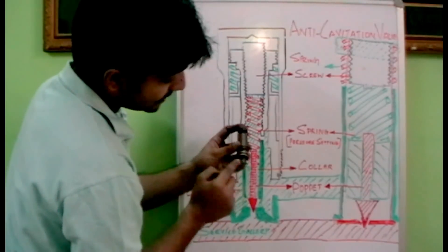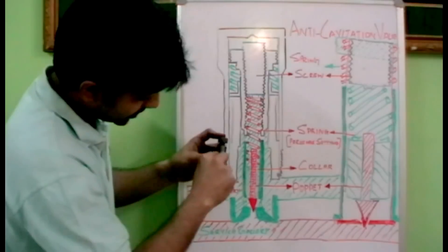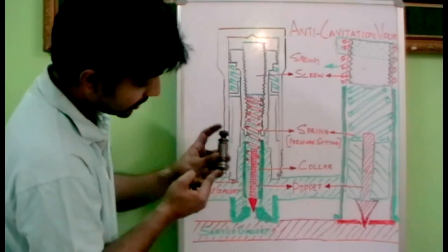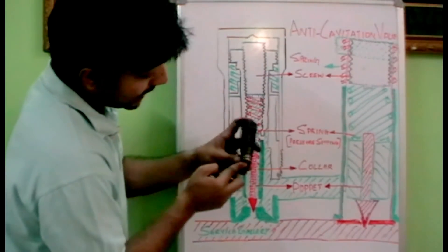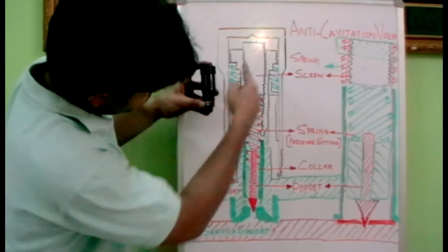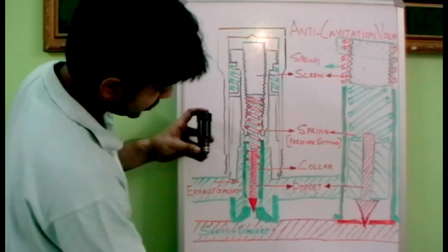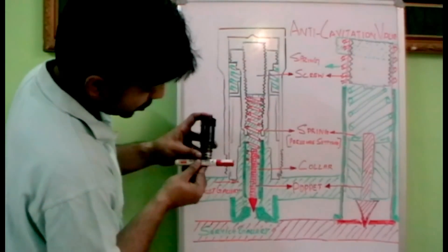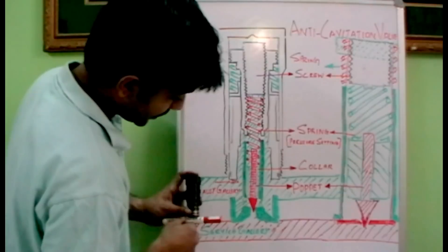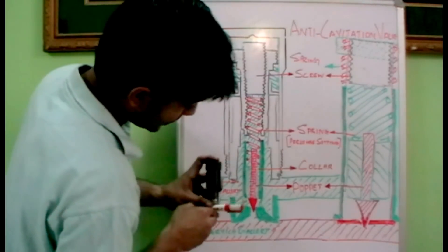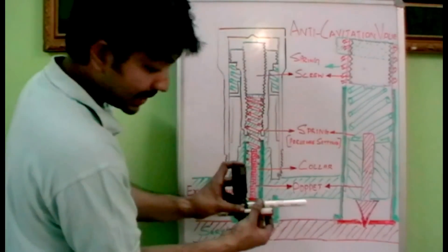This area is directly connected towards the service gallery and here towards the exhaust gallery. Normally the auxiliary relief valve will be kept like this. This is the auxiliary relief valve. The bottom portion — this portion — is the service gallery, and here you can see the exhaust gallery.